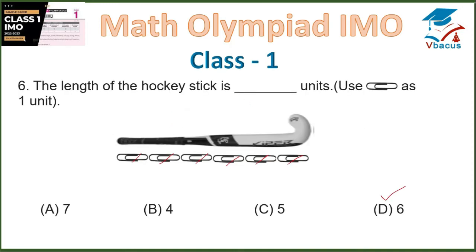Question 6: The length of the hockey stick is dash units. Use a clip as one unit. So we have to count how many clips there are: 1, 2, 3, 4, 5, 6 — 6 clips are there. The answer is 6, so option D is correct.